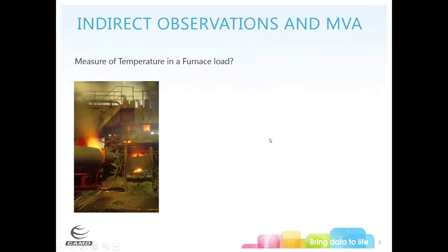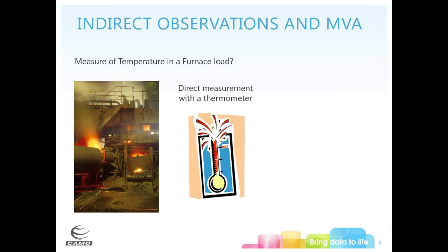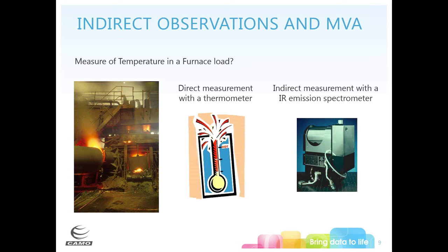Sometimes we want to make indirect observations. For example, if you wanted to measure the temperature in a furnace, there aren't really any thermometers that allow direct measurement because they'll all explode. What we can do is use an IR emission spectrometer, look at the light coming off of it, and depending on the shape of the output, figure out what the temperature actually is. These types of indirect measurements often need a multivariate approach.